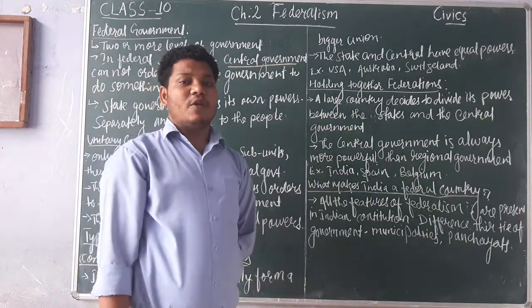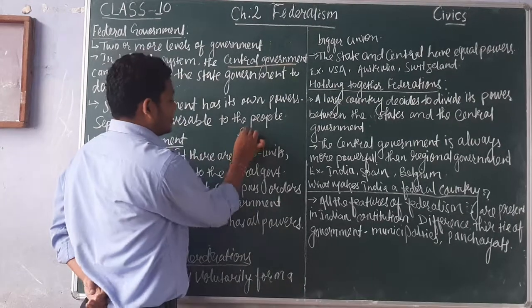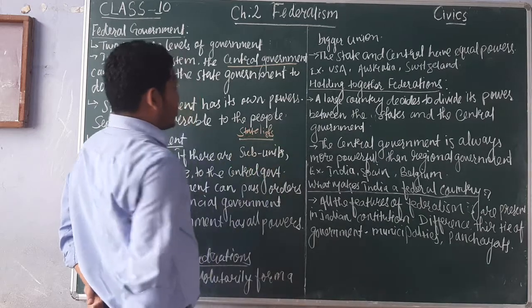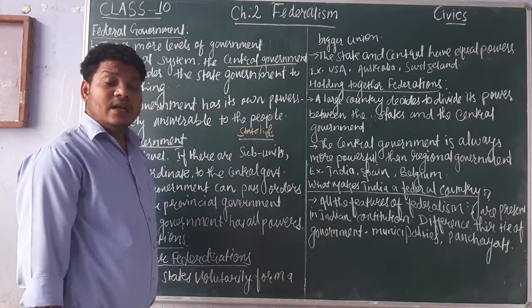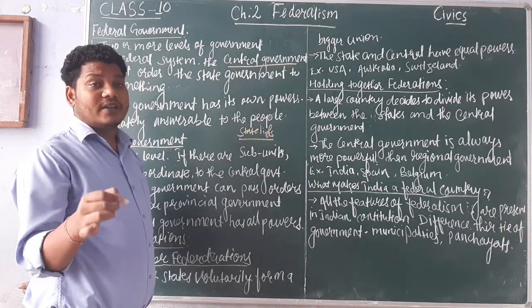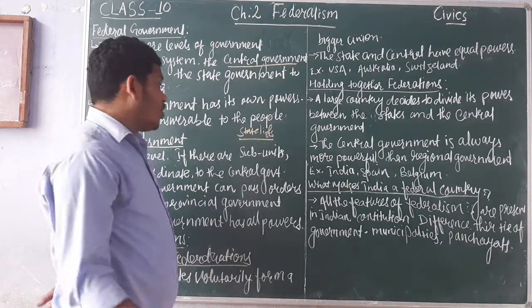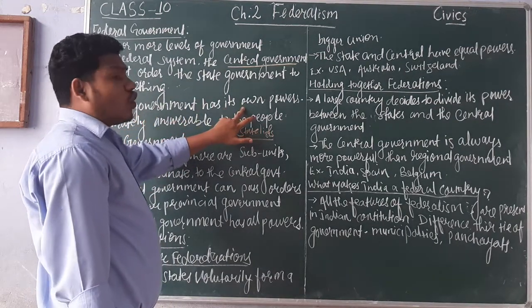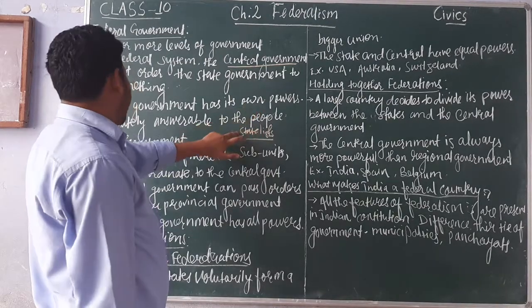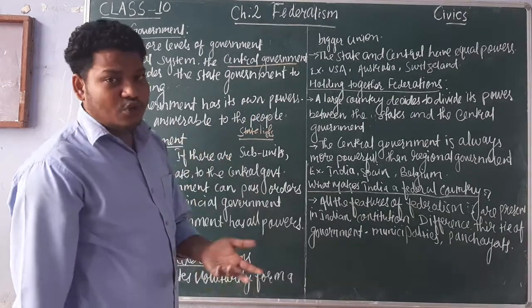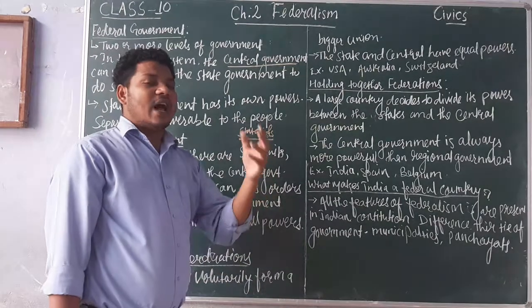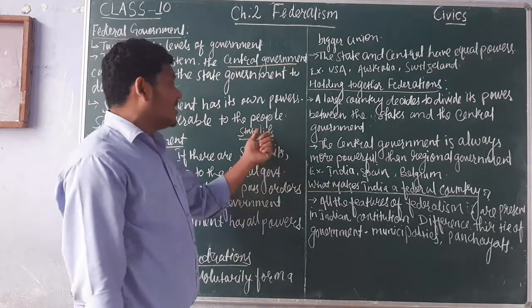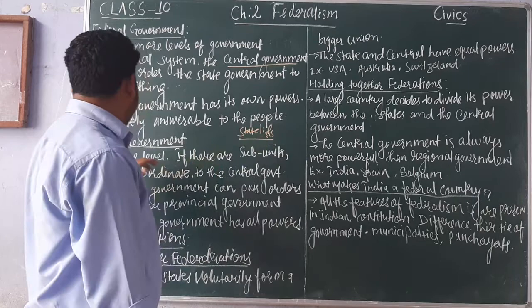A state government has its own powers mentioned in the state list. In the state list, all the powers and functions of state governments are given — where a state government can make laws or decisions, it is already written in the state list. A state government has power to make its own decisions regarding subjects, and they are separately answerable to the public.